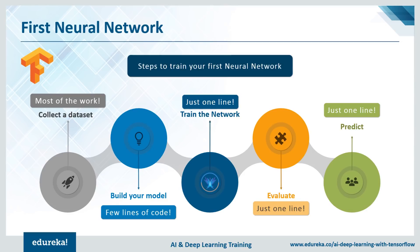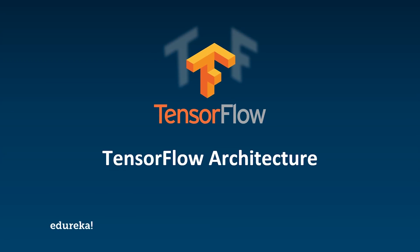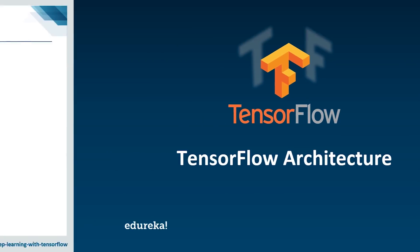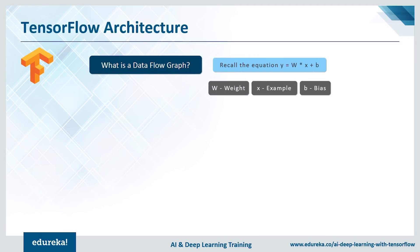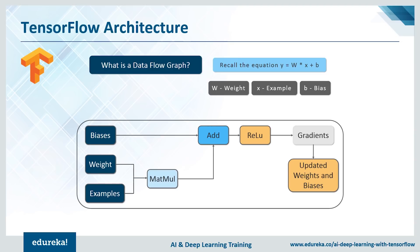Let's jump into knowing how the TensorFlow architecture actually works. There's a quick prerequisite: we need to know what a data flow graph is. Recall the equation y = wx + b, where W is the weight, X is the example, and B is the bias. It's similar to the computation graph we saw earlier. To show how TensorFlow works entirely: weights and examples are used to generate tensors by performing matrix multiplication, and then an activation function is run on the result.